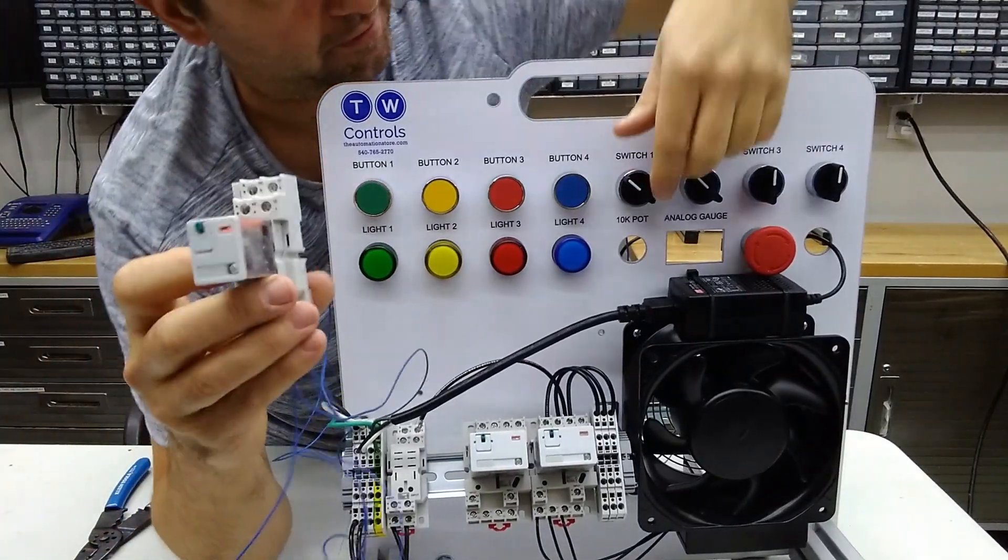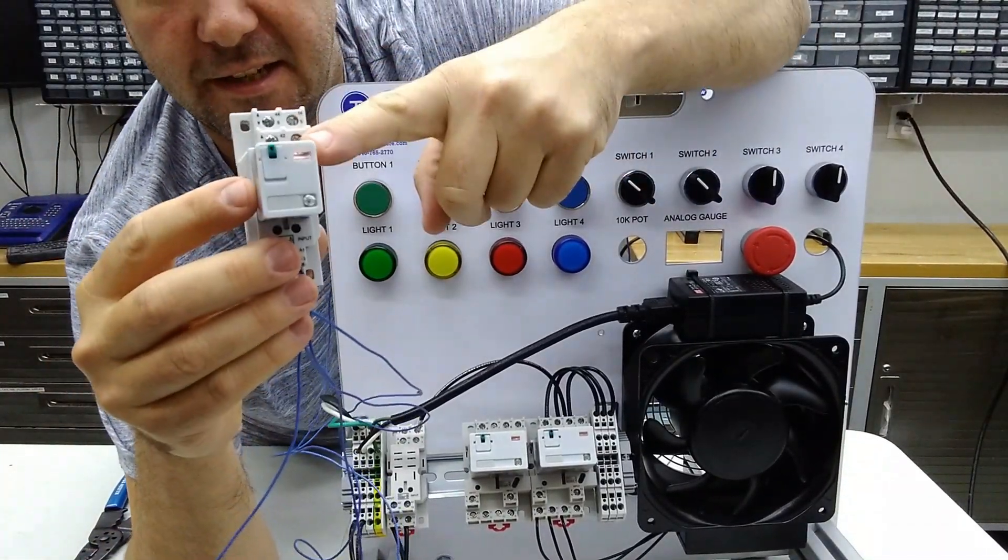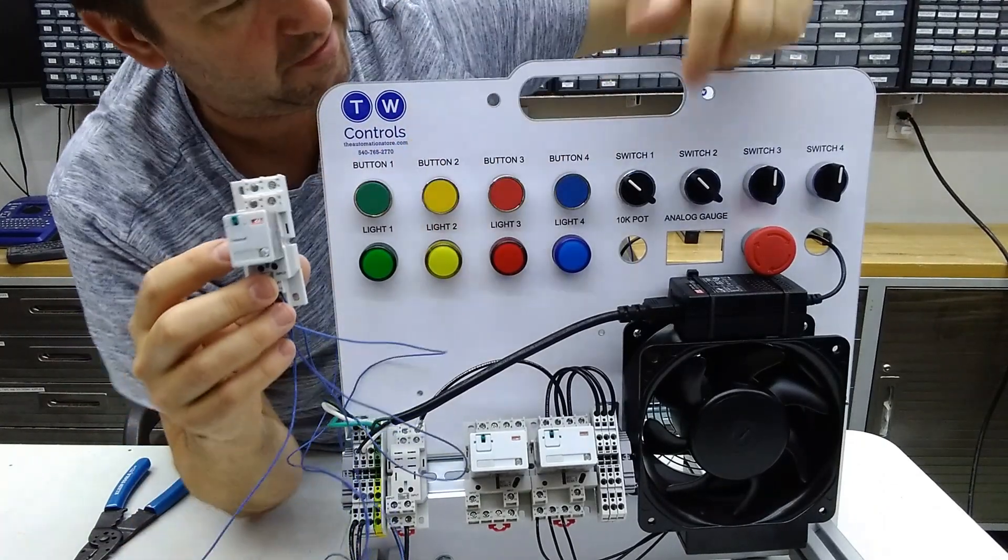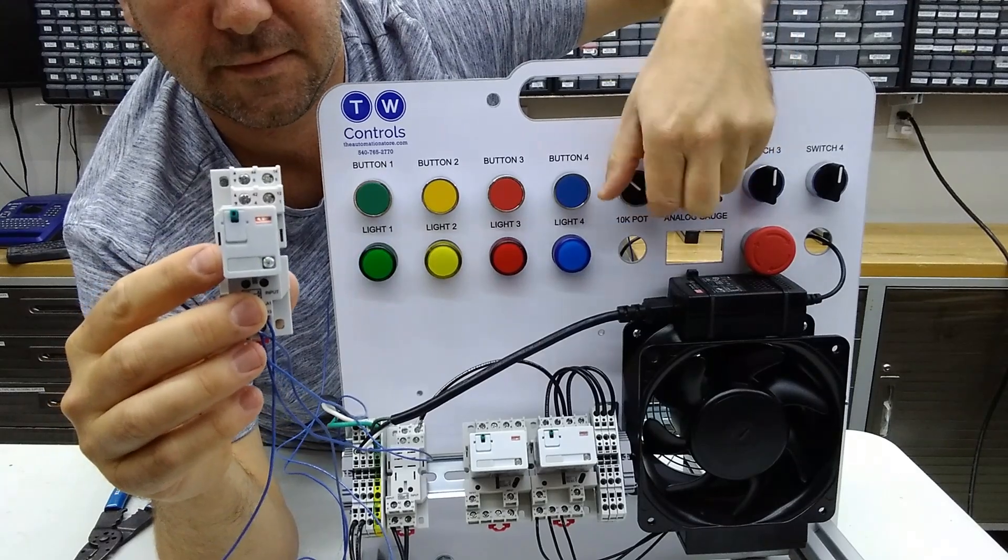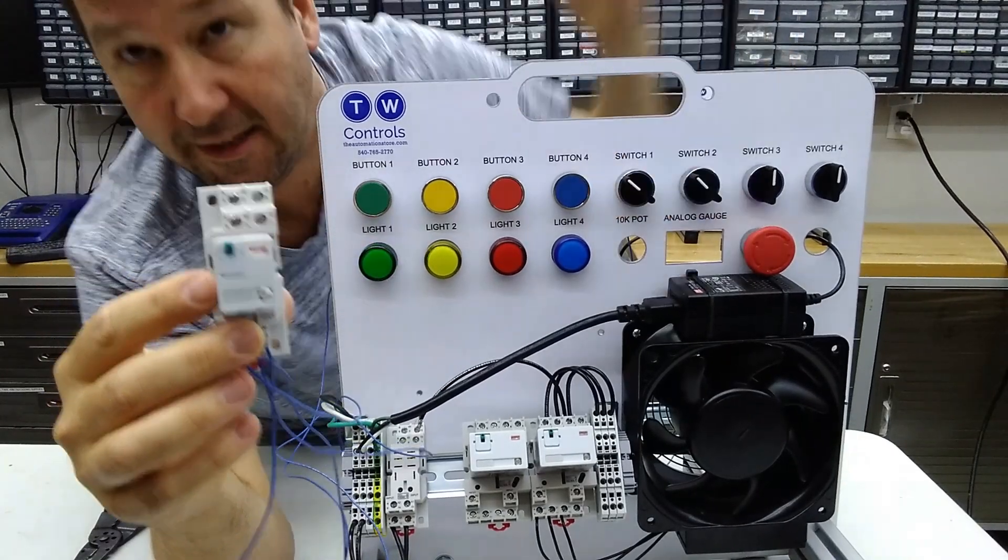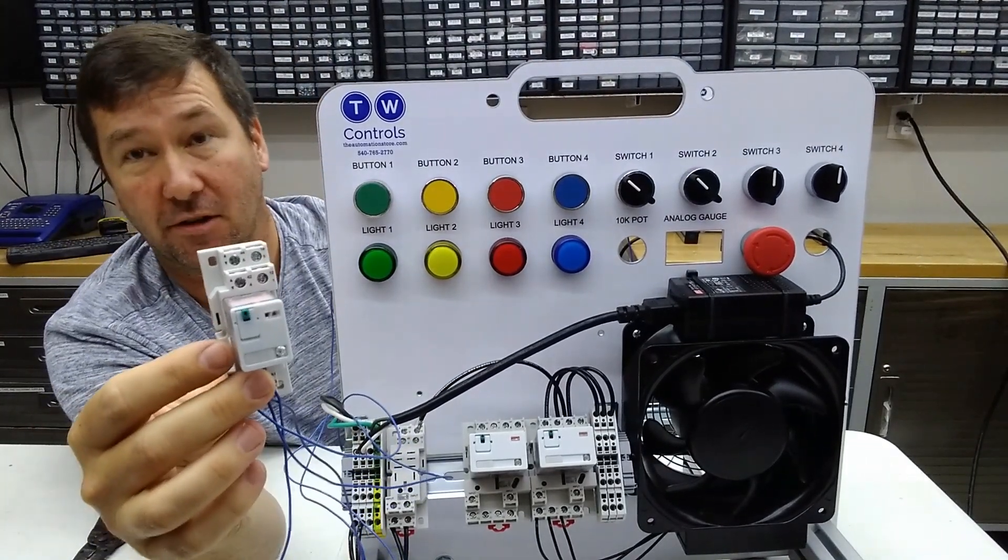Now we'll switch it around. And not only will you see the indicator here, but you'll also see this green indicator light. And that is a basic parallel circuit.